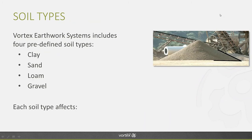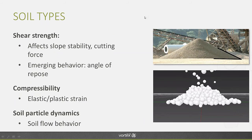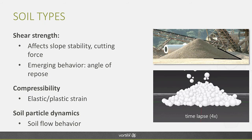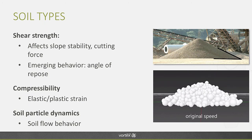Vortex Earthworks Systems provides convenient presets to simulate different types of soils: clay, sand, loam, and gravel. Each soil type affects the shear strength of the material, compressibility, and soil particle dynamics. One important emergent behavior captured in the simulation is the angle of repose of loosely poured material. Furthermore, when you push with your bucket into the soil, you get certain elastic and plastic strains that differ from material to material.